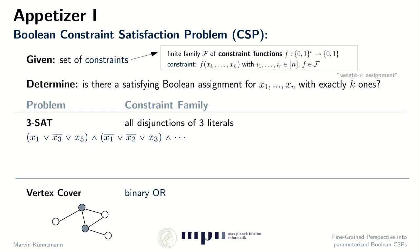So what is the fine-grained complexity of these problems? It's easy to see that any such problem we can solve by exhaustive search in a running time of roughly n to the k, by simply testing all weight k assignments. On the other hand, problems like vertex cover are well known to be fixed parameter tractable. In particular, there's an algorithm that solves it in a running time with no dependence on k in the exponent of n.